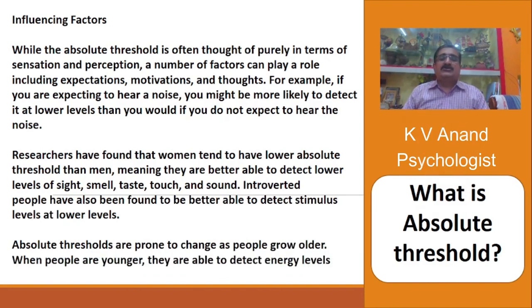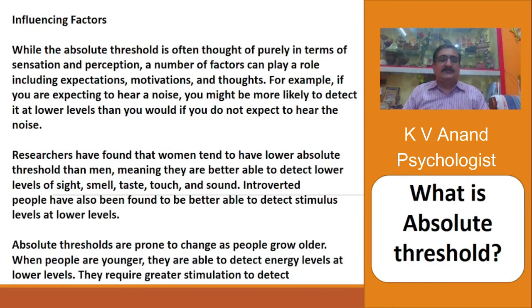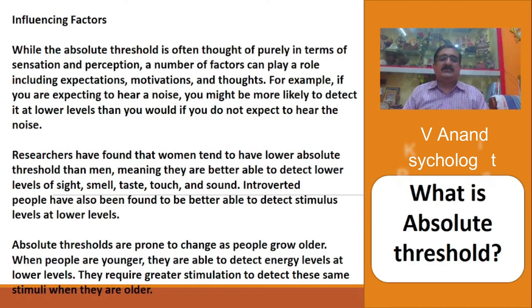Absolute thresholds are prone to change as people grow older. When people are young, they are able to detect stimuli at lower levels, but they require greater stimulation to detect those same stimuli when they are older.